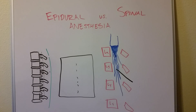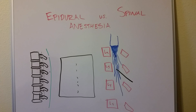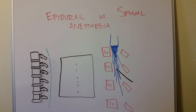That covers the differences between the two: the longer-lasting epidural versus the quick, powerful spinal. Epidurals are most commonly used for childbirth anesthesia. Spinals are most commonly used these days for total joint replacements. Thanks.